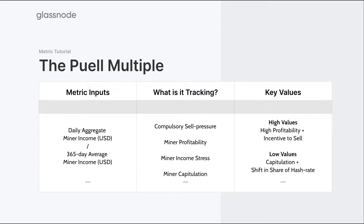Conversely, very low values of the Pure Multiple suggest that the current daily income is substantially less than the yearly average, which can generally suggest that there's a capitulation event in play. At the end of large mining cycles, we can have a shift in the overall share of hash rate, where weaker miners have to drop off the network and turn off their machines, stronger miners gain a larger share of the hash network, and therefore they can actually sell fewer coins in order to cover the same fiat expenses.